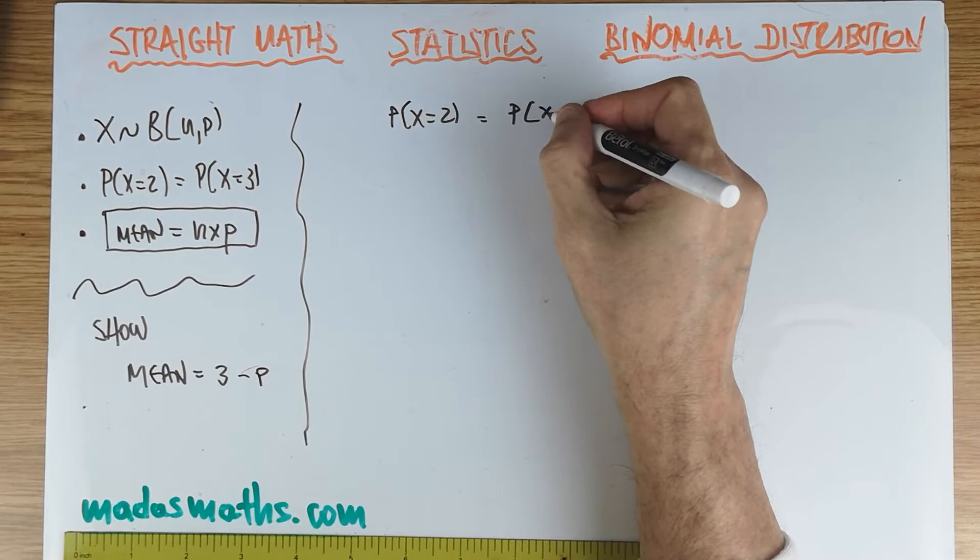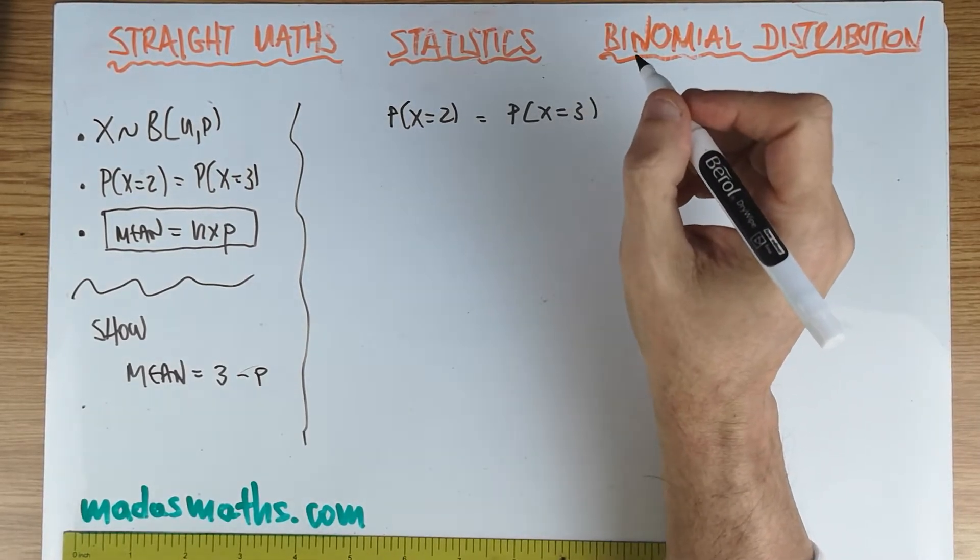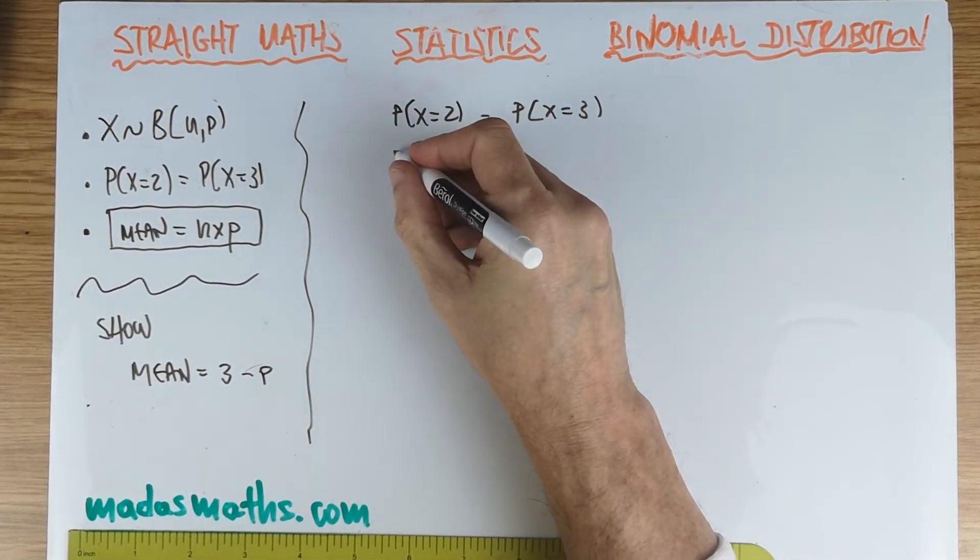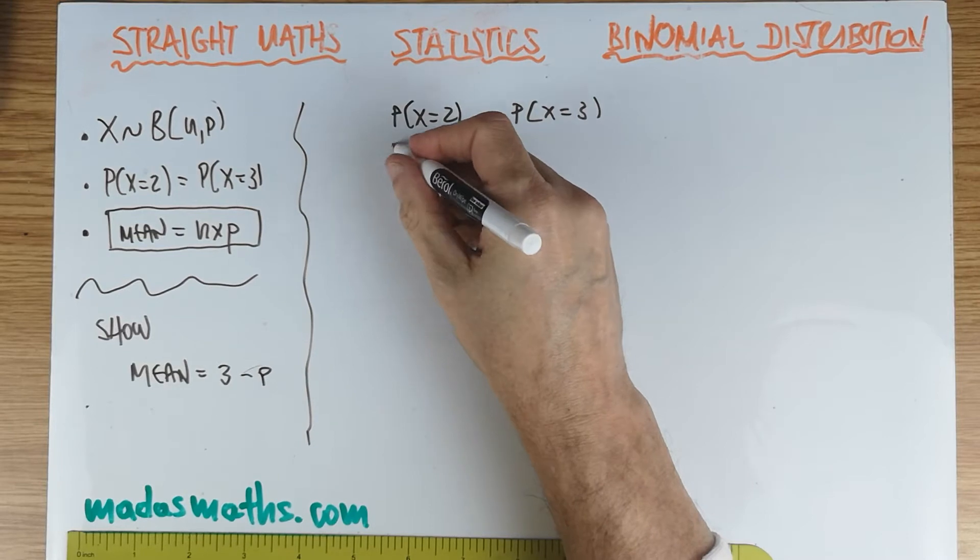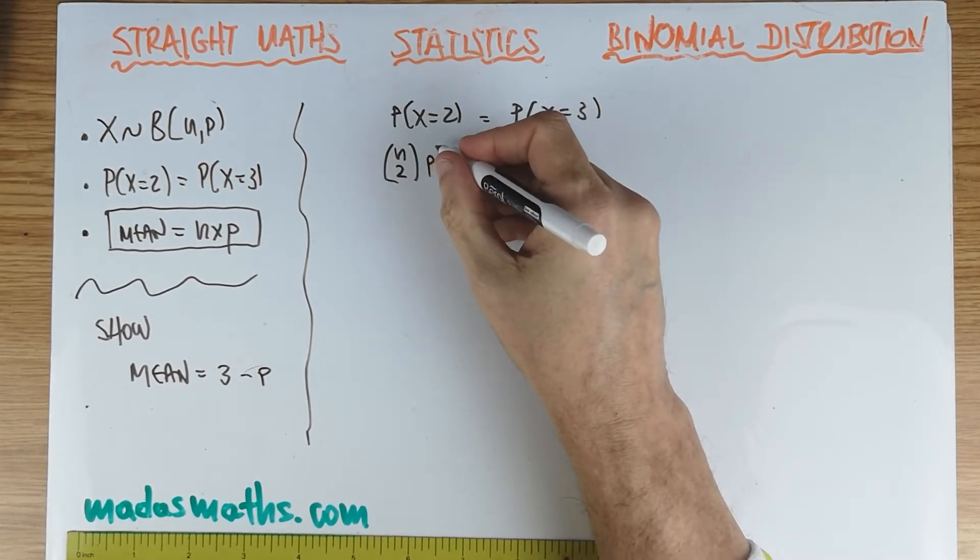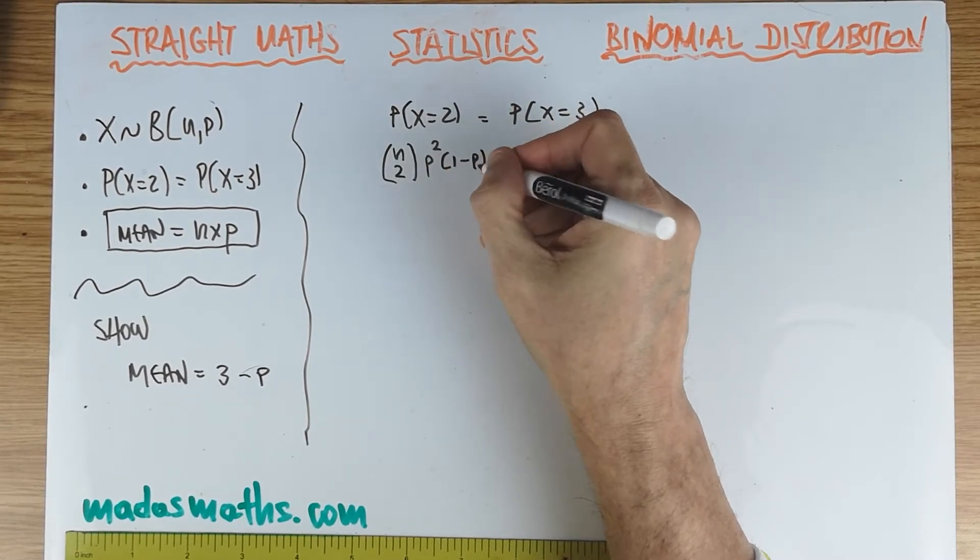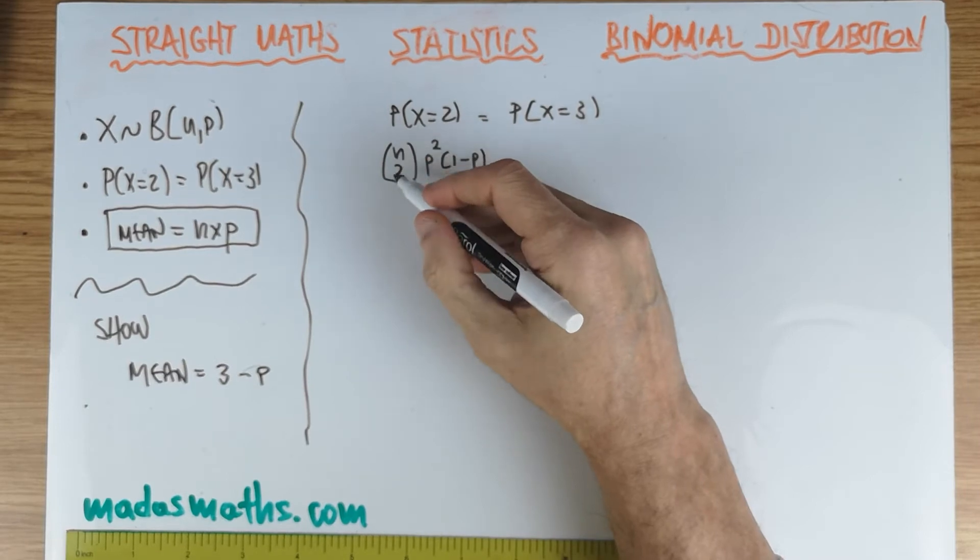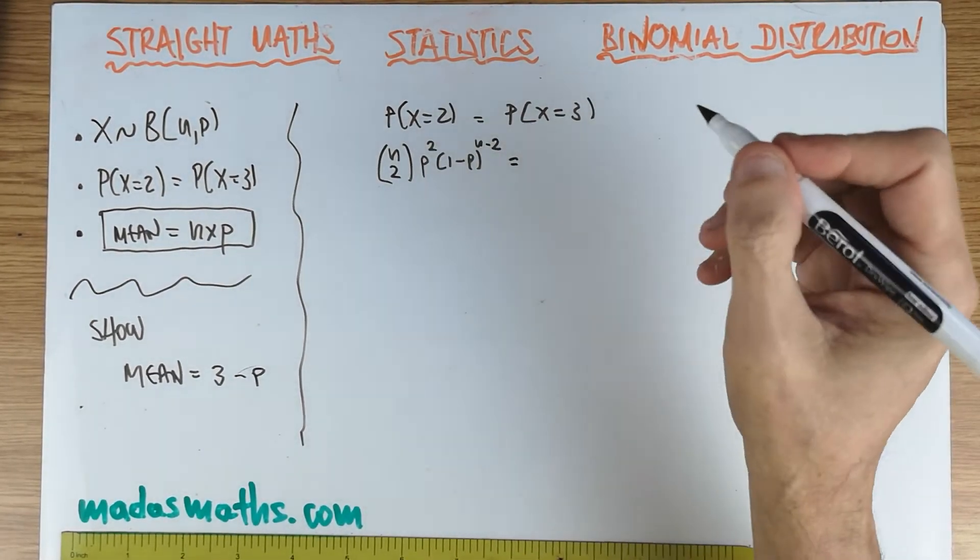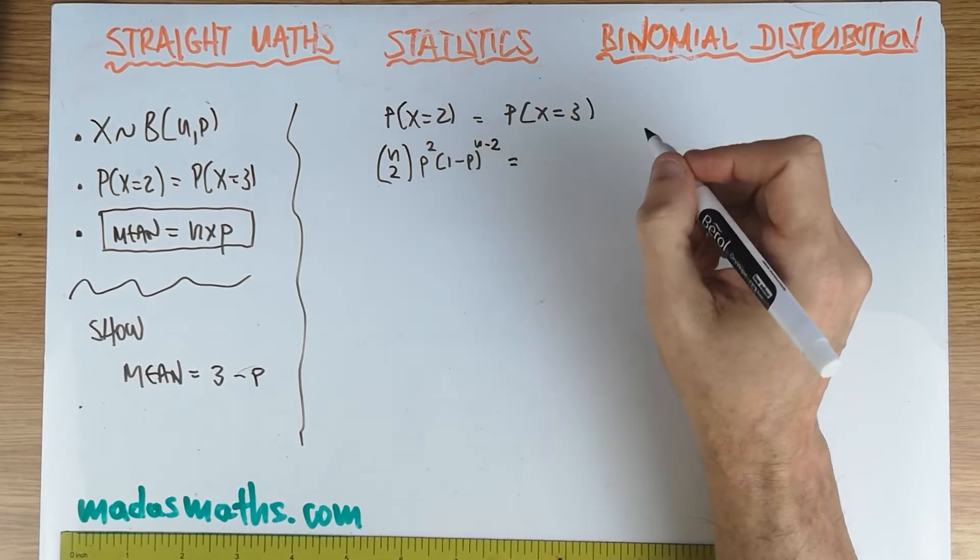So where do we start? We'll start with this equation. Now the question the way it's written stops you from number crunching, sticking things into a calculator and just getting answers. If this is the case, the probability X equals two is n choose two, probability of success squared, and then the complement of the probability, the rest of the probability will go n minus two. So if you're stuck with this and you're not quite sure or it doesn't make much sense, please try some numbers and then it will make more sense.